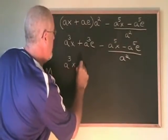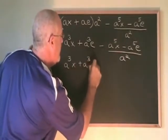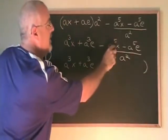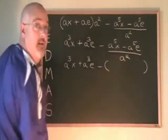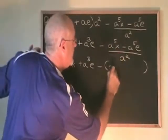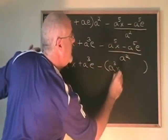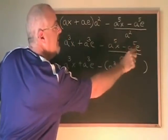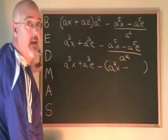a to the power of 5x divided by a squared gives a cubed x. I write down the minus. a to the power of 5e divided by a squared gives a cubed e.